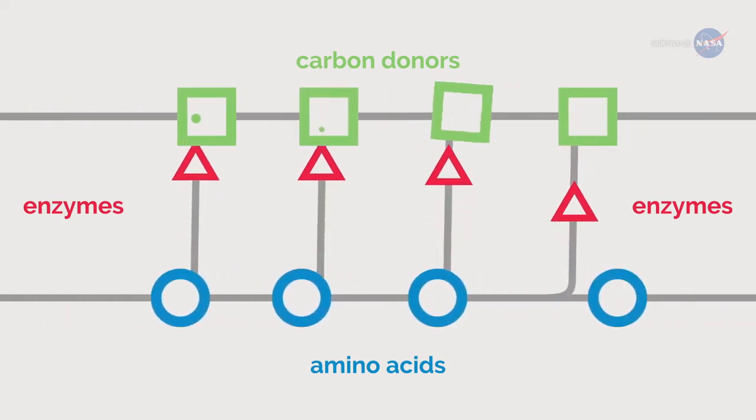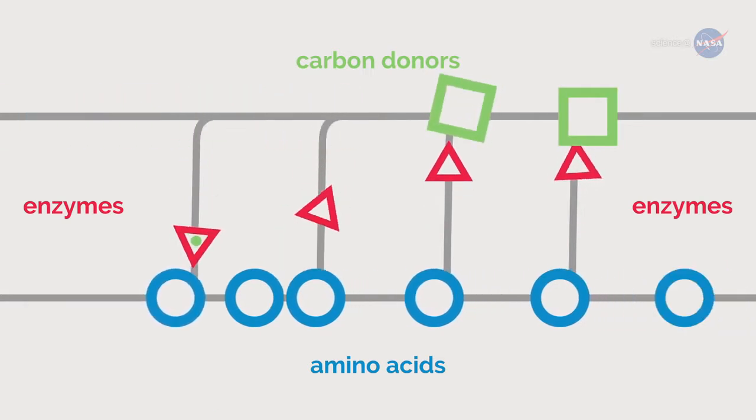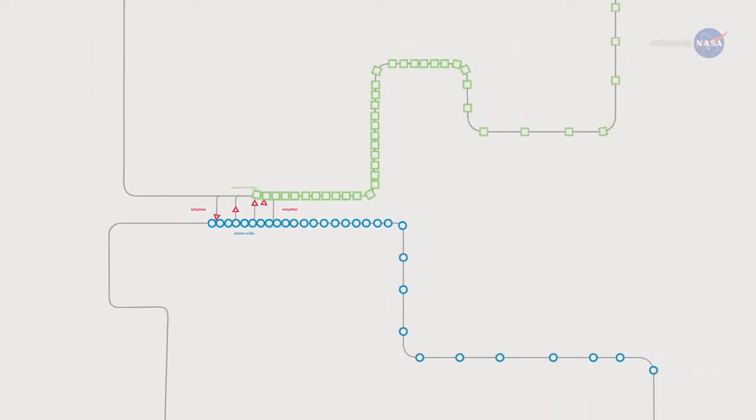If anything goes wrong, for example, if this chain reaction doesn't work properly, slows down or backs up, the effect is felt down the line.